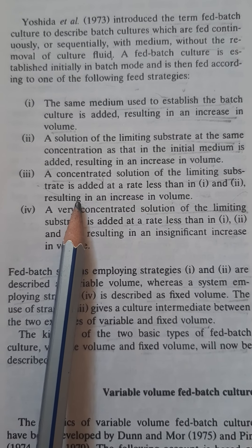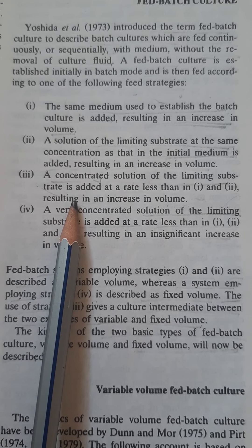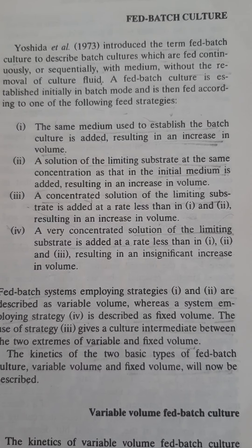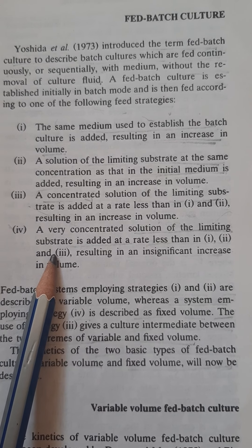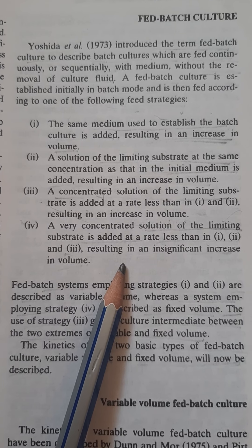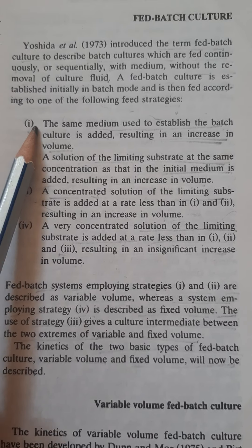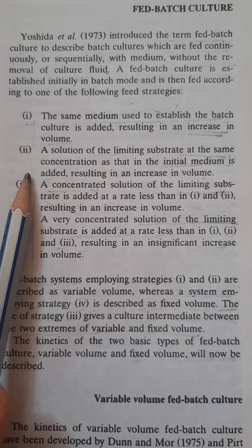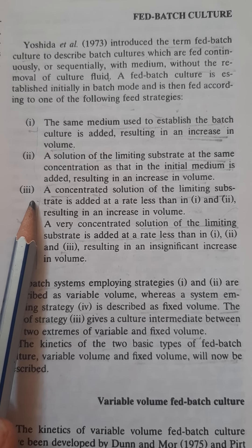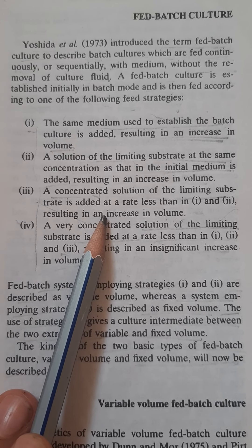The third strategy uses a concentrated solution of the limiting substrate. The fourth strategy uses a very concentrated solution of the limiting substrate added at a very slow rate, which results in an insignificant or minimal increase in volume. Based on these, we can classify the systems: the first two strategies give a variable fed-batch system, while the third is an intermediate state between variable and fixed volume.